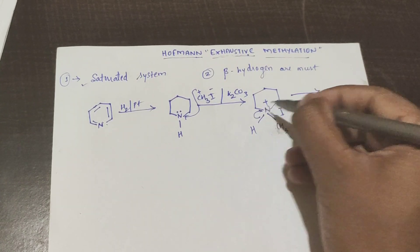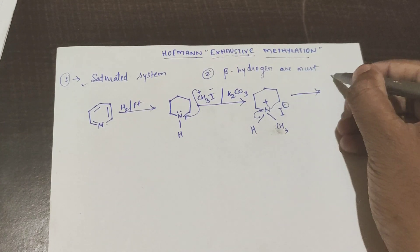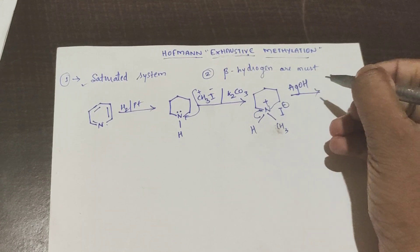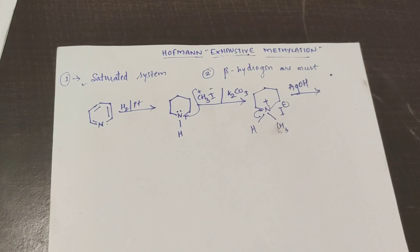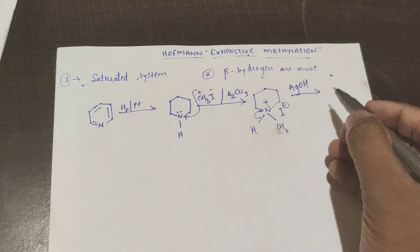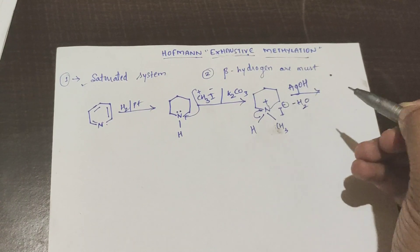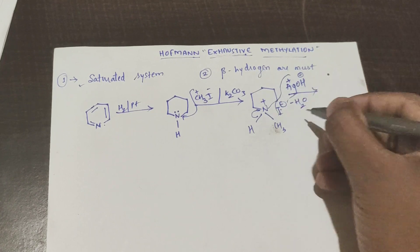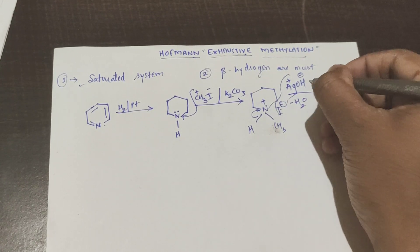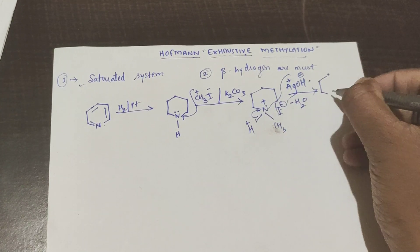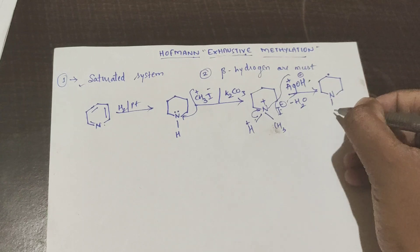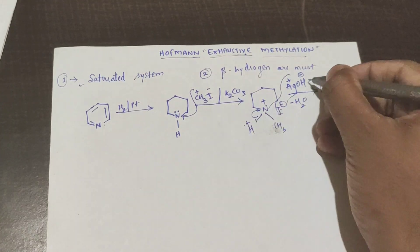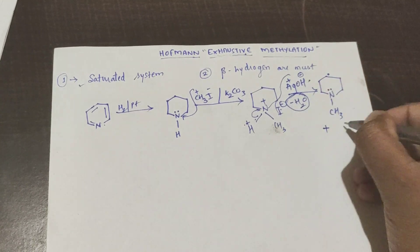Now I use AgOH here — AgOH is used as the dehydrating agent. What happens is H2O is removed. Here Ag+ and I minus combine, so you get AgI. The OH minus and H+ combine to come out as water. The lone pair of electrons come back on the nitrogen, and H+ and OH minus come out as water while Ag+ and I minus form AgI.